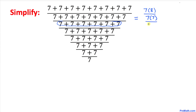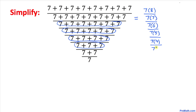Now let's focus on the next bunch of sevens — they are being added six times, so I can write divided by seven times six. The next bunch of sevens are being added five times: seven times five. Then seven times four, seven times three, seven times two, and finally seven.